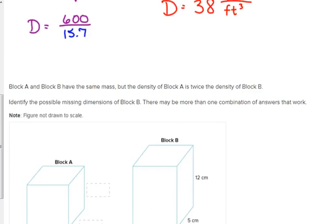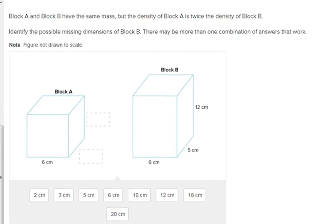Alright. So, let's look at the next example. So, block A and block B have the same mass, but the density of block A is twice the density of block B. Identify the possible missing dimensions of block that should actually be A. They gave us all the ones for B. There may be more than one combination of answers that work. So, let's set this up. Now, instead of using D for density since I'm dealing with two of them, I'm going to label them B and A. So, let's find the density for B since we know the measurements for B.